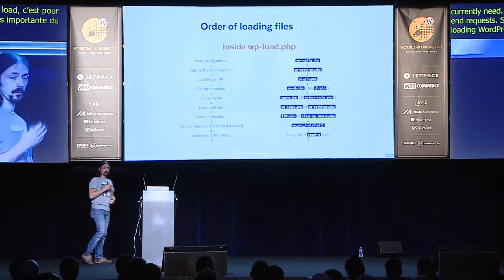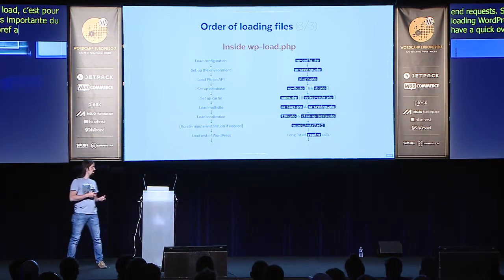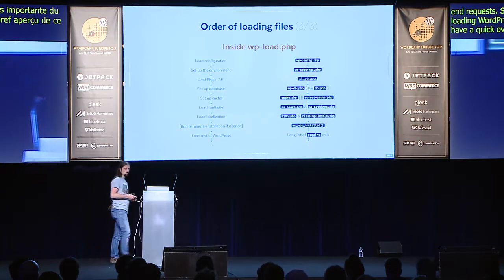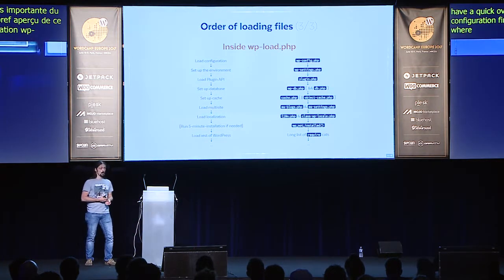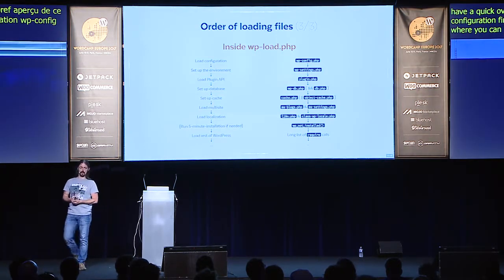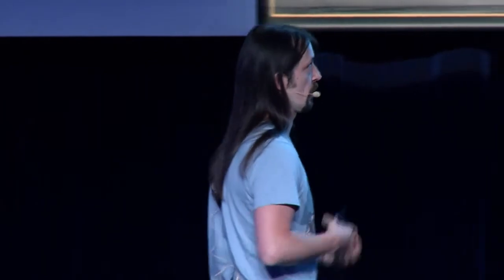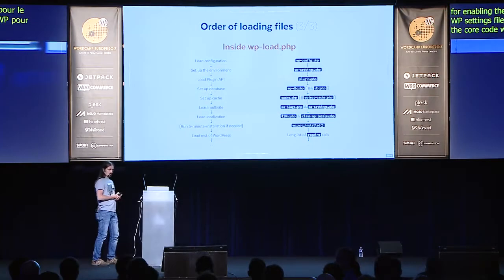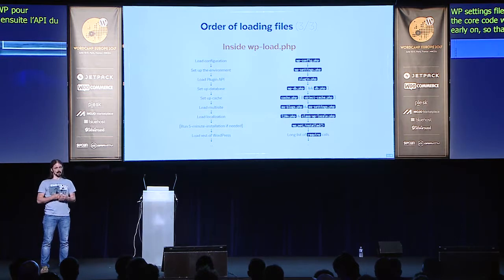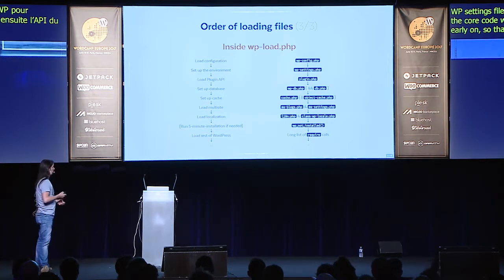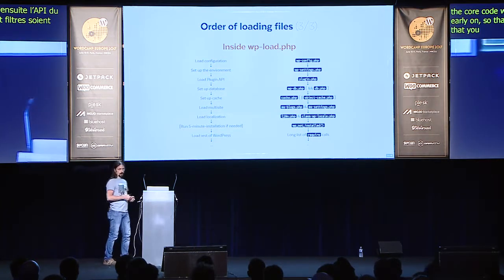Here we have a quick overview of what WP load actually does. It loads the configuration first — that's the wp-config file that most of you probably know, where you can prepare your database settings, set constants for enabling debugging, or for setting up your cache and so forth. Then it loads the wp-settings file, which is responsible for setting up the entire environment in which the core code will load. Then the plugin API is loaded — this is loaded very early on so that as soon as possible all the actions and filters are available, so that you can run plugin code or theme code as soon as possible.